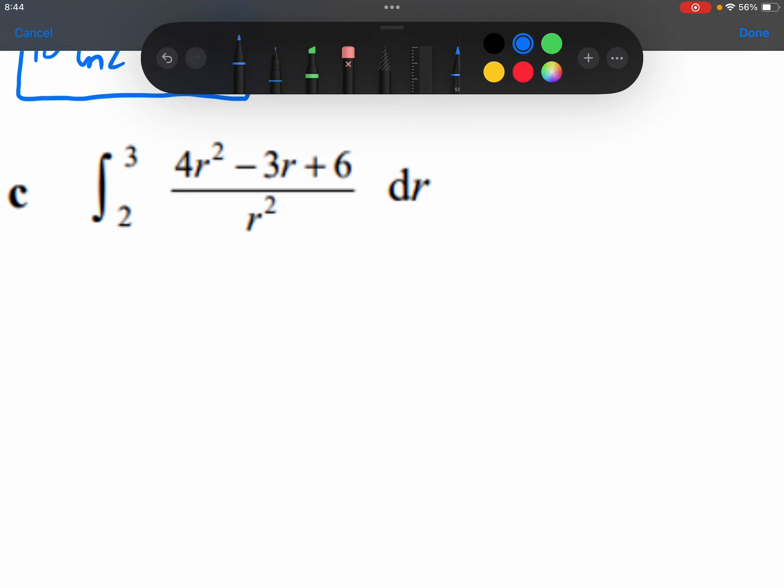We're going to split the division up into three terms. The 4r squared over r squared minus the 3r over r squared plus the 6 over r squared. These r squareds will cancel. This r will cancel with one of these r's on the denominator. Now, there's no cancellation over here, but I am going to rewrite this r squared on the denominator. I'm going to move that to the top with a negative 2 power so I can integrate that term easily.